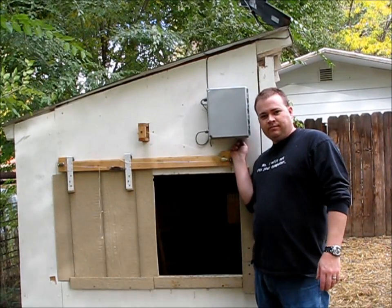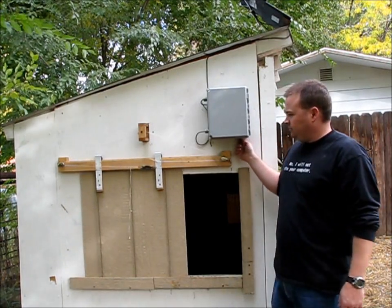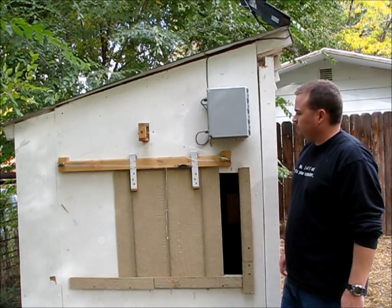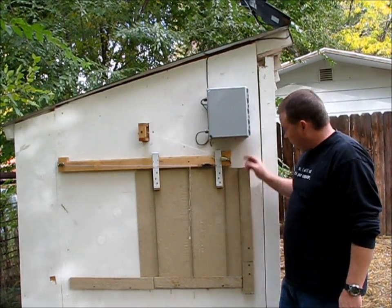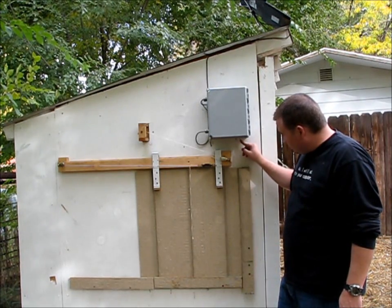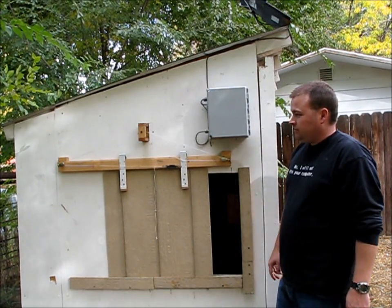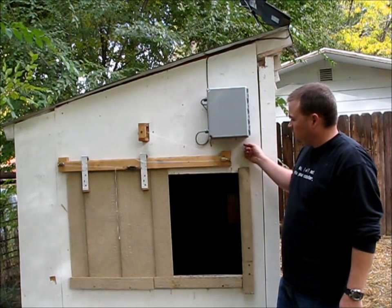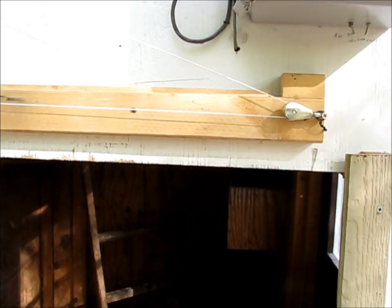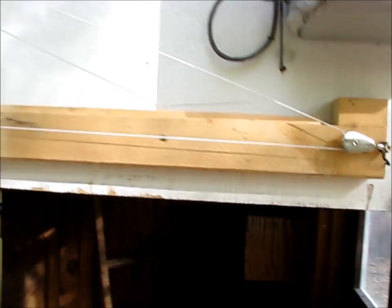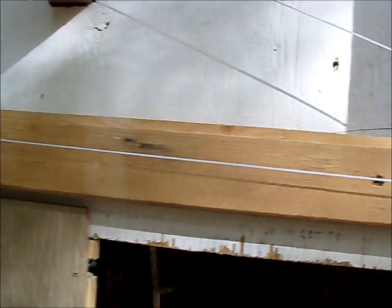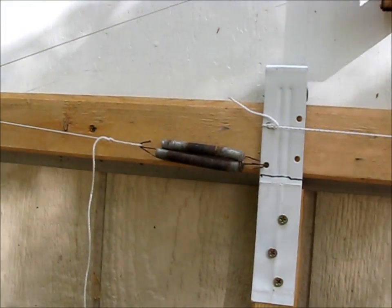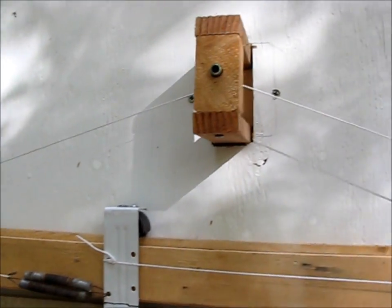This is my automatic chicken door in test mode. Here's a little pulley, and the springs keep the tension on the rope tight at all times.